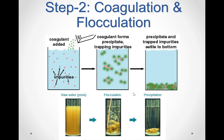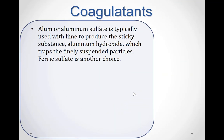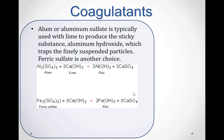Step two of the water treatment process is coagulation and flocculation. Chemicals with a positive charge are added to the water. The positive charge of these chemicals neutralizes the negative charge of dirt and other dissolved particles in the water. When this occurs, the particles bind with the chemicals and form larger particles called floc. To encourage increased floc production, gentle mixing is utilized. Coagulants can be poly aluminum chloride, aluminum sulfate, or ferric sulfate. For example, with aluminum sulfate, if you add lime or calcium oxide, the reaction will form aluminum hydroxide.